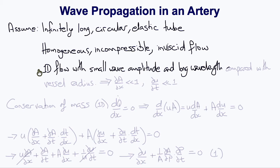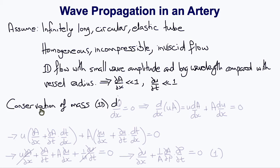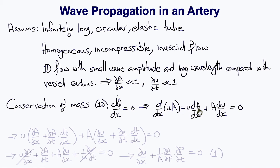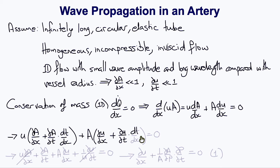We also assume that the amplitude of the wave is small and the wavelength is long compared with the vessel radius. This allows us to assume that the gradient of the cross-sectional area is very small and that the rate of change of velocity is also very small. From the one-dimensional version of mass conservation, we derive that dq/dx equals zero, and since q equals mean velocity u times cross-sectional area A, we get u(dA/dx) plus A(du/dx) equals zero.